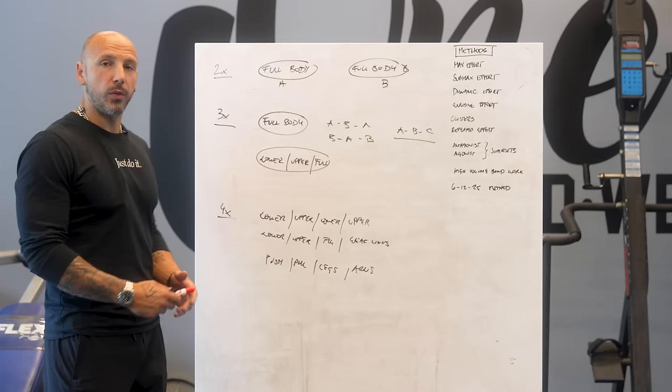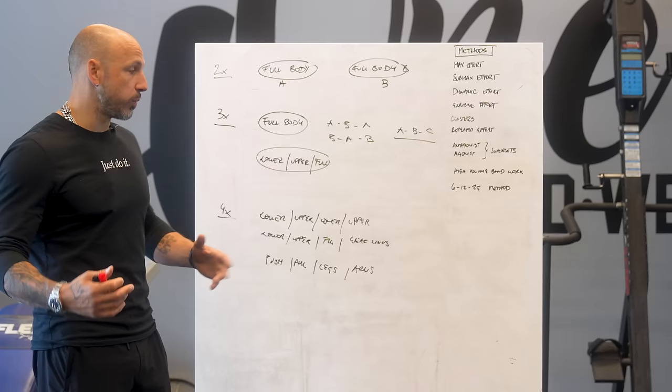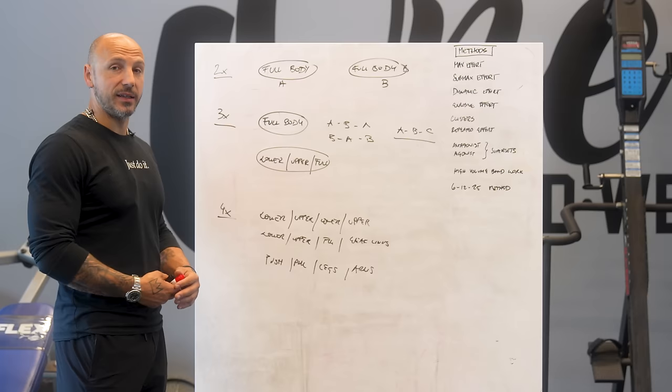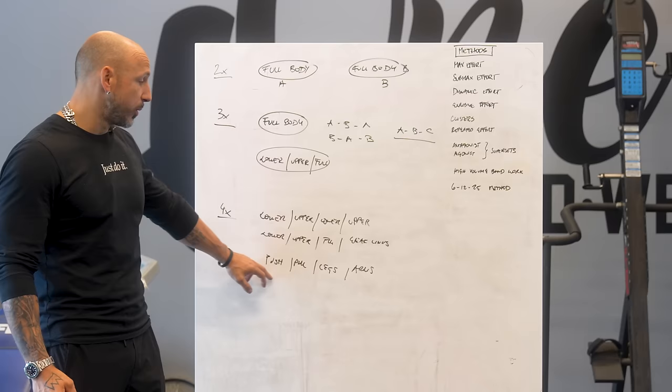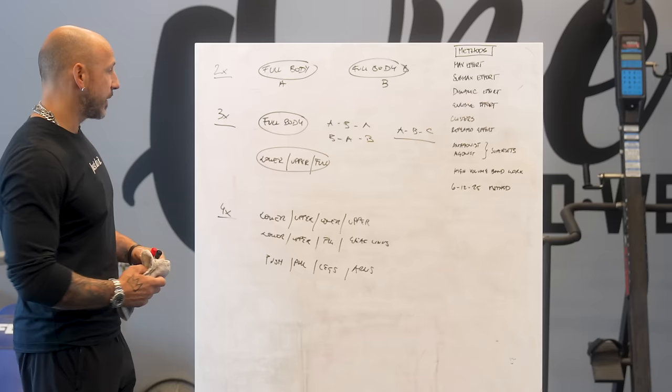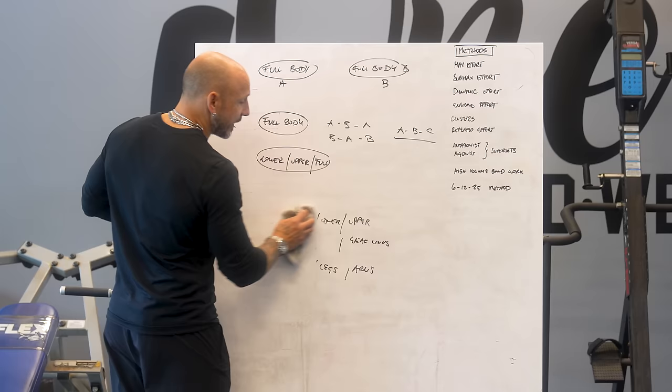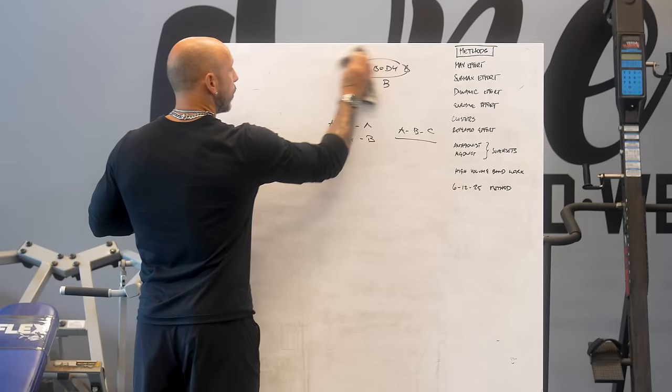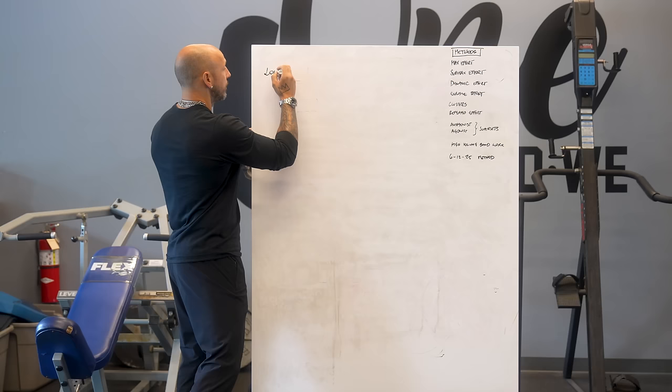For a five-day-a-week model, there's the traditional bodybuilding split — chest, shoulders, back, and so on — but we don't use that much here as it's not nearly as effective. For five days, we'd essentially rotate the Push/Pull/Legs/Arms model. Now I'm going to take the Lower/Upper/Full template as an example and break it down while explaining the different methods — we're literally going to walk through creating a program.